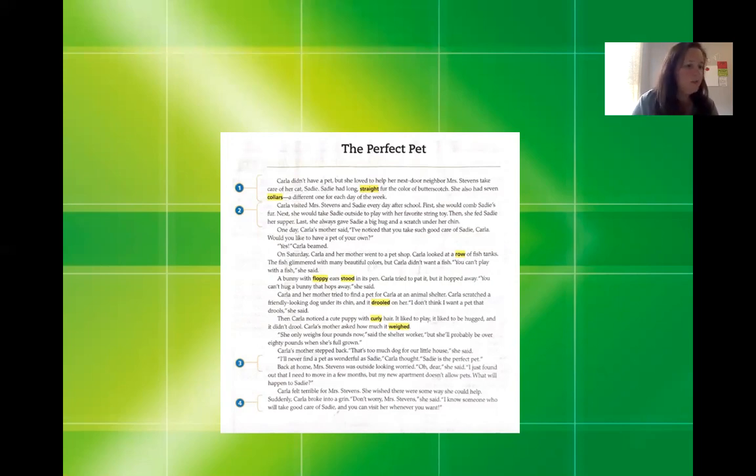So the title of my story is called The Perfect Pet. Carla didn't have a pet, but she loved to help her next door neighbor Mrs. Stevens take care of her cat, Sadie. Sadie had long straight fur the color of butterscotch. She also had seven collars, a different one for each day of the week. So as you can see, there are two words that are highlighted here, straight and collars. Those are our vocab words that we're studying this week. Now I'm going to stop after this first paragraph and think about some of the details that I just read in The Perfect Pet.